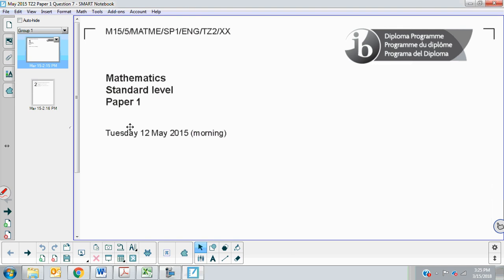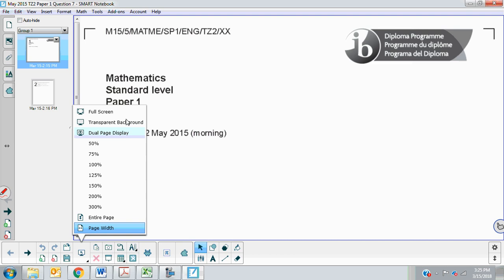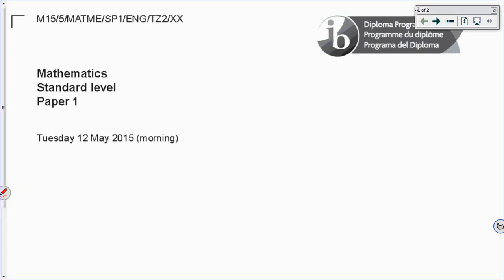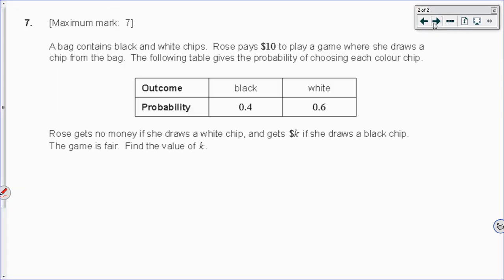In this video, I'll go over question 7 from the IB Math SL exam given in May 2015, time zone 2. This is kind of a tricky one, and it's strangely worth 7 marks, though there's not a lot to it. It's a probability distribution question, sort of, but mostly a fair game question.